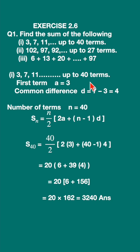This is an arithmetic progression. The sum of the terms of this arithmetic progression is called arithmetic series, and it is given by this formula.